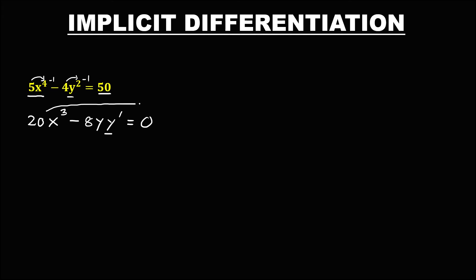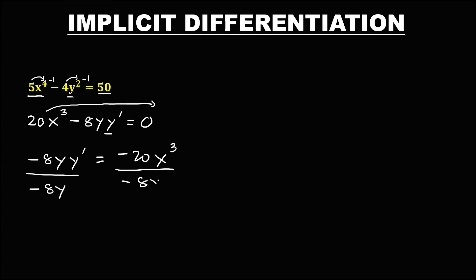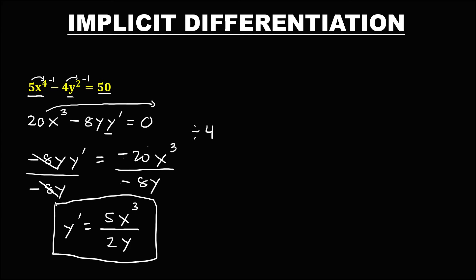So we need to solve for y prime. Transpose this 20x to the power 3, so this becomes negative 8y times y prime equals negative 20x to the power 3. Then to solve for y prime, divide both sides: negative divided by negative is positive. This 20 and 8 are divisible by 4, so 20 divided by 4 is 5, and 8 divided by 4 is 2. So y prime equals 5x to the power 3 over 2y. This is now the derivative.